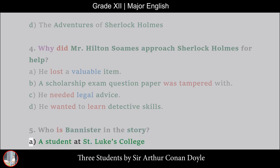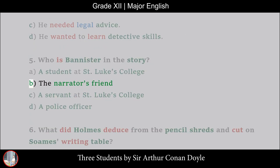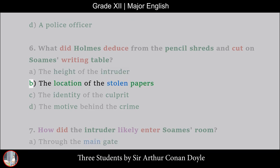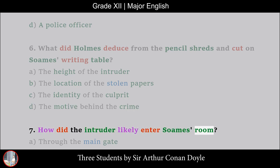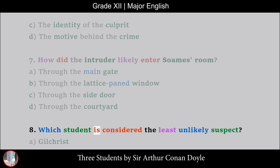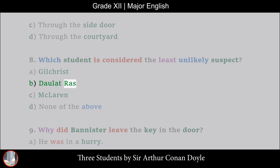6. What did Holmes deduce from the pencil shreds and cut on Soames' writing table? A. The Height of the Intruder, B. The Location of the Stolen Papers, C. The Identity of the Culprit, D. The Motive Behind the Crime. 7. How did the intruder likely enter Soames' room? A. Through the Main Gate, B. Through the Lattice-Paned Window, C. Through the Side Door, D. Through the Courtyard. 8. Which student is considered the least unlikely suspect? A. Gilchrist, B. Doorlet Raz, C. McLaren, D. None of the above.